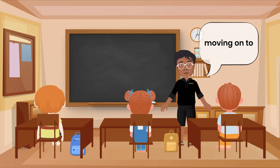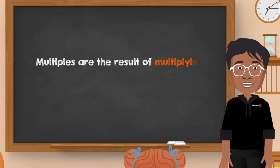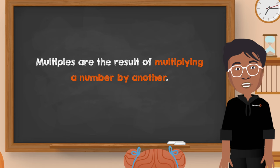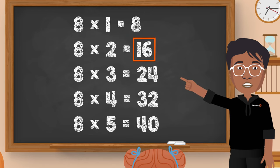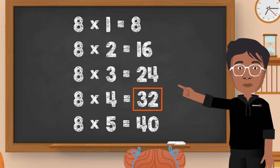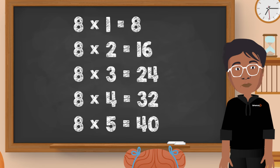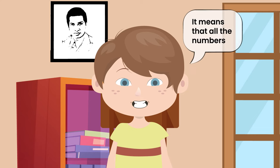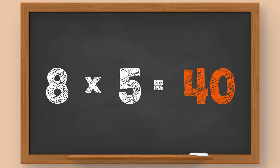Now moving on to multiples. As the name itself suggests, multiples are the result of multiplying a number by another. For example, the multiples of eight are eight itself, then sixteen, twenty-four, thirty-two, and so on. You take any number and multiply it by eight — the product is going to be a multiple of eight. Easy, right? It means that all the numbers in the table of eight are the multiples of eight. Like eight multiplied by five equals forty, so forty should be a multiple of eight, right?